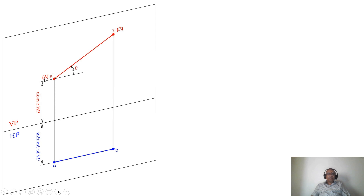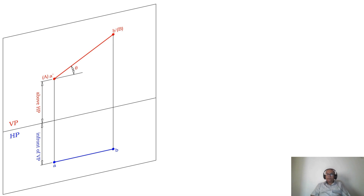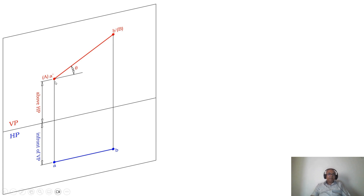You can see this line is in true length in VP — that is why you have capital A and capital B. For this line to be in true length, it should be parallel to VP, meaning its image is seen in HP, so you look in the top view. If from the top view the two endpoints of the line are parallel to XY — the intersection of VP and HP — then the line small a and small b is parallel to XY in the top view. If the top view line is parallel to XY, its corresponding front view A dash and B dash is in true length.